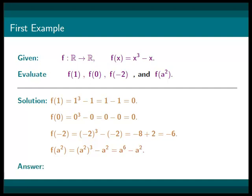So, in conclusion, our answer will be 0 for f at 1, 0 for f at 0, negative 6 for f at negative 2, and a to the power of 6 minus a squared for f at a squared.